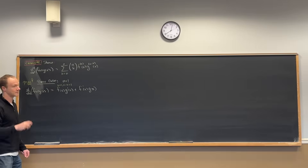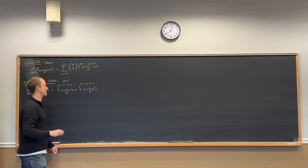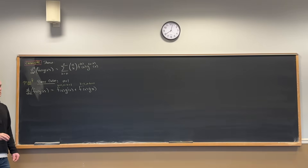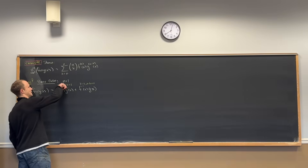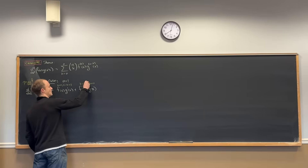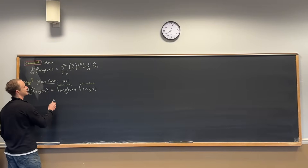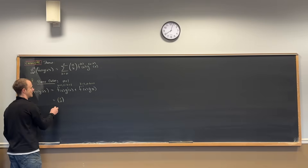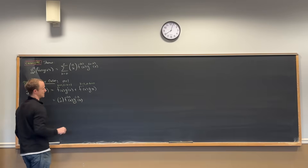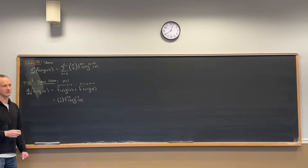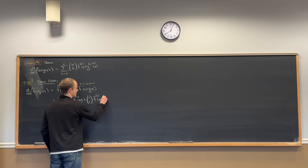In other words, n is equal to 1. And then this term looks like k is equal to 1 and n minus k is equal to 0. Both of them are with n equal to 1. So instead of n minus k, it's 1 minus k. We can rewrite this as 1 choose 0, the zeroth derivative of f and then the first derivative of g. And then 1 choose 1, the first derivative of f and the zeroth derivative of g.